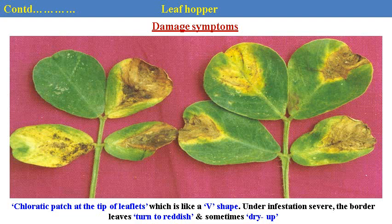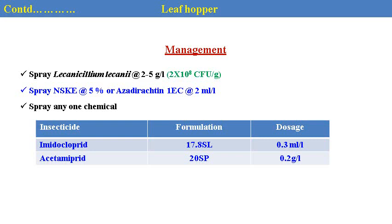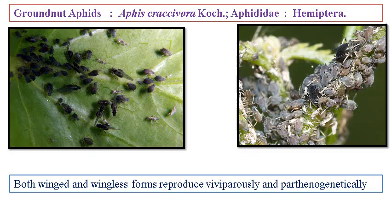Management of leaf hopper: imidacloprid can be sprayed for effective control of leaf hopper, along with 5% NSKE. The same chemicals imidacloprid and acephate can be used in the field. The groundnut aphid, Aphis craccivora, is very clearly observed in the summer groundnut crop.